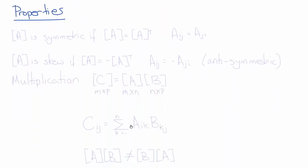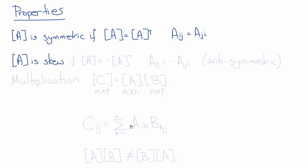Some properties of matrices include symmetry. Matrix A is symmetric if the components of A equal the components of A transpose — in other words, if we swap rows and columns we get the same matrix, or in index notation AIJ equals AJI. Matrix A is skew or anti-symmetric if the components of A equal the negative components of A transpose, or AIJ equals negative AJI.